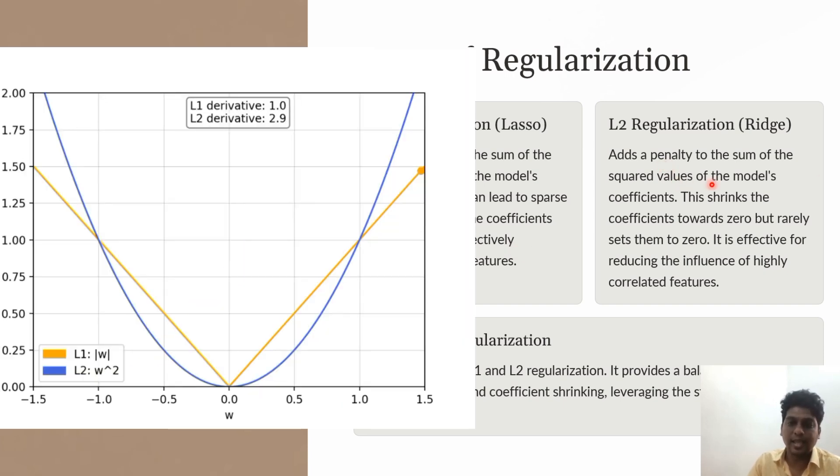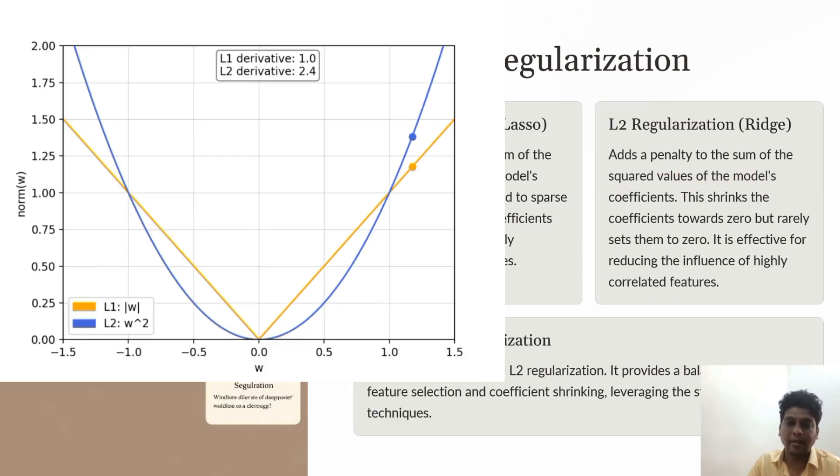In L2, we add a penalty to the sum of squared values, shrinking coefficients towards zero but rarely setting them to zero. It's effective for reducing the influence of highly correlated features.